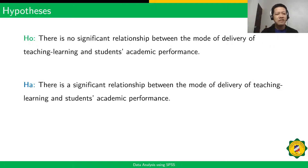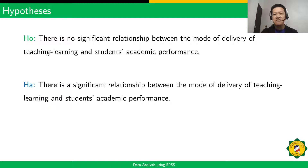For the formal null and alternative hypothesis, the null is: there is no significant relationship between the mode of delivery of teaching learning and student's academic performance. The alternative is: there is a significant relationship between the mode of delivery of teaching learning and student's academic performance.